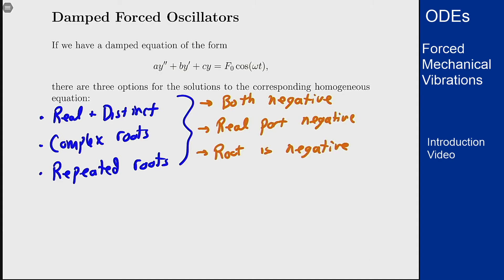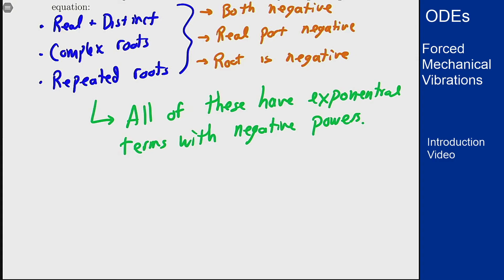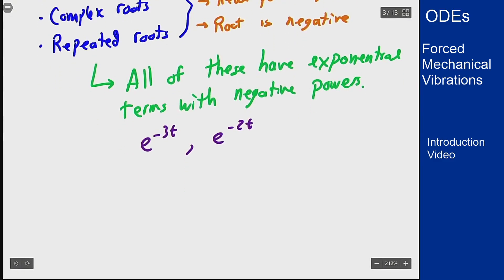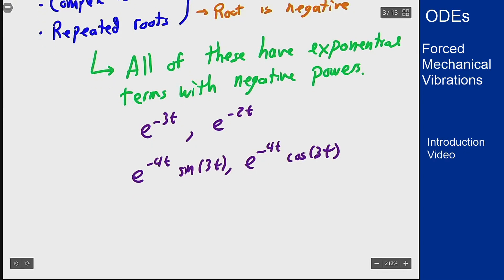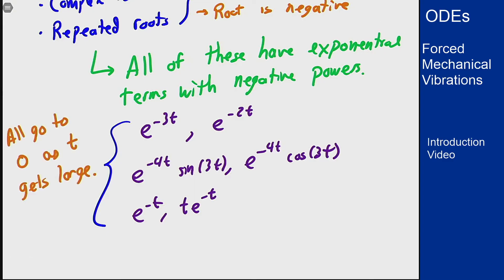So what does this mean? All three of these solutions contain exponential terms with negative coefficients. For instance, the real and distinct case you might have like e^(-3t) and e^(-2t). In the complex case you might have e^(-4t)sin(3t) and e^(-4t)cos(3t). For the repeated root, e^(-2t) and te^(-2t) might happen. What do we notice here? These all go to zero as t gets large. That's for the homogeneous part.